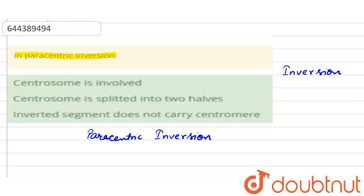Inversion is joining opposite ends. Okay, so joining opposite ends. And paracentric means without centromere.